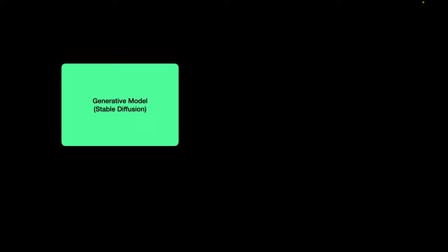Now this problem of precisely controlling the spatial layout of generated images through input images is what is addressed by ControlNet. The inputs could be sketches, normal maps, depth maps, edges, segmentation masks, or even human pose.